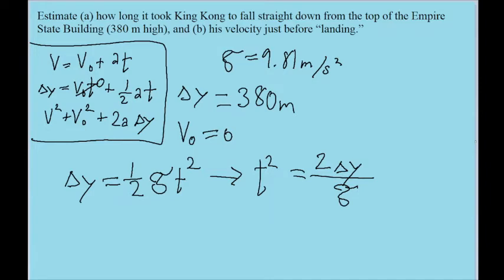So that becomes two times delta y divided by g. And then to get the t on its own, without the square, we just take the square root of both sides. So that becomes t is equal to the square root of two times the vertical displacement divided by g. And what we find,